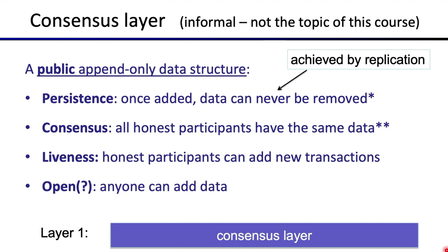There's a very important property called liveness, which means that the chain doesn't get stuck — honest participants can always add new transactions and write new data to the blockchain. The fourth property is openness, which says that anyone can add data; it's not just registered and authorized participants. Some chains are open — like the Bitcoin and Ethereum networks, where anyone can write data and mine blocks — while some other networks are not as open. There's a whole spectrum of openness.